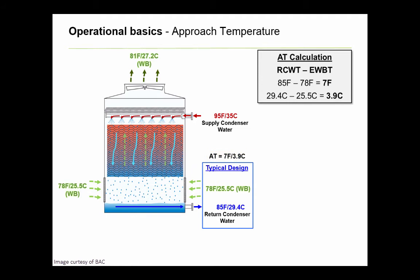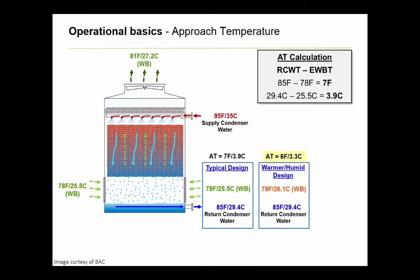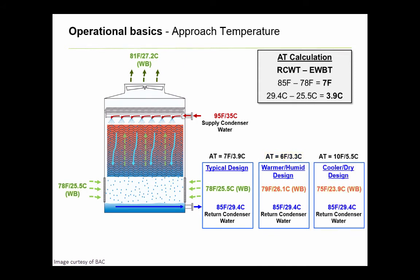But it can move in either direction depending on the climate. In warmer, more humid climates, you will see smaller approach temperatures due to higher wet bulbs. And in cooler, drier climates, you will see higher approach temperatures due to lower average wet bulbs. This is all important information in the design and operation of a chiller plant.